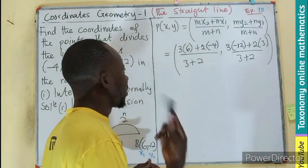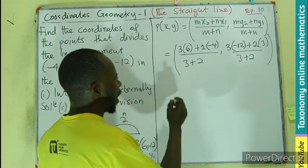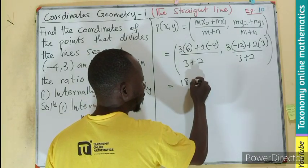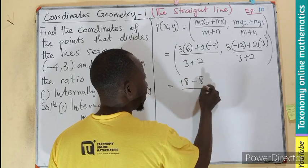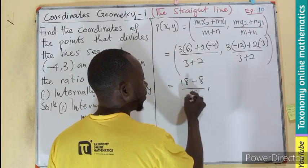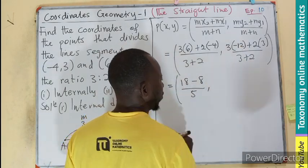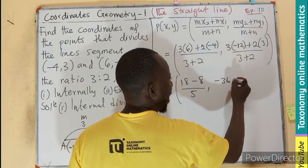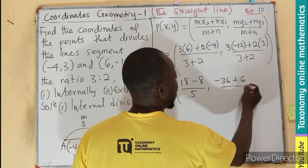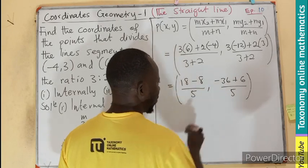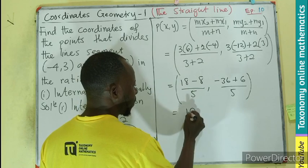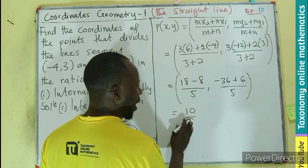Let's get that multiplication. I will be having 18. In the case of this, -8. This will be 5. In the case of that, you will be having -36, then plus 6, divided by 5. What would that be further? I believe I will get 10 out of 5.